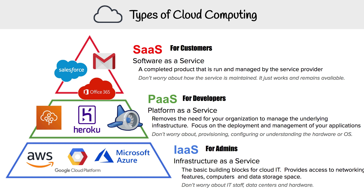Starting at the top here, we have Software as a Service, also known as SaaS. These are for customers. The idea is that you have a completed product that is run and managed by the service provider. You don't have to worry about how the service is maintained — it just works and remains available. Some examples of SaaS are Gmail, Office 365, or Salesforce.